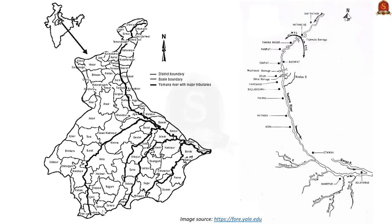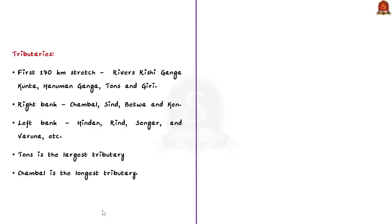Coming to its tributaries, in the first 170 km stretch of the river, the tributaries Rishi Ganga Kuntha, Hanuman Ganga, Tons and Giri join the main river. Some important major right bank tributaries are Chambal, Sindh, Betwa and Ken. When talking about left bank tributaries of Yamuna, it includes Hindan, Rind, Sengar and Varuna. Among these tributaries, Tons is the largest tributary and Chambal is the longest tributary.